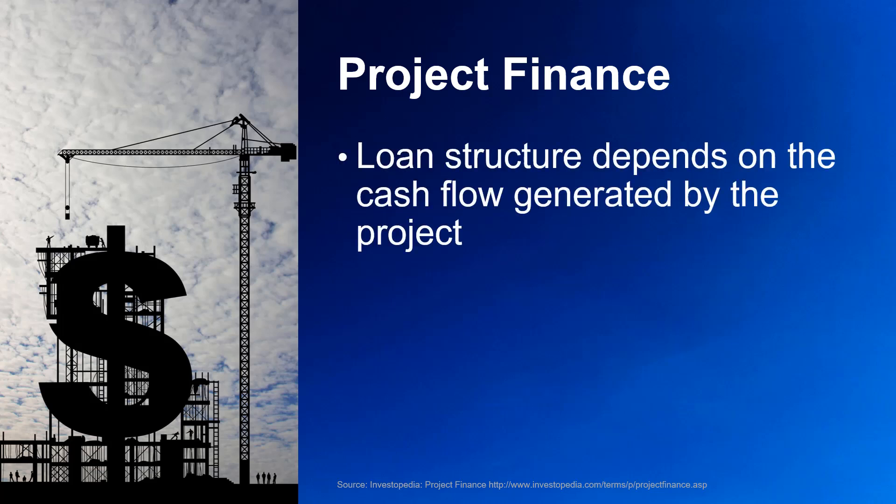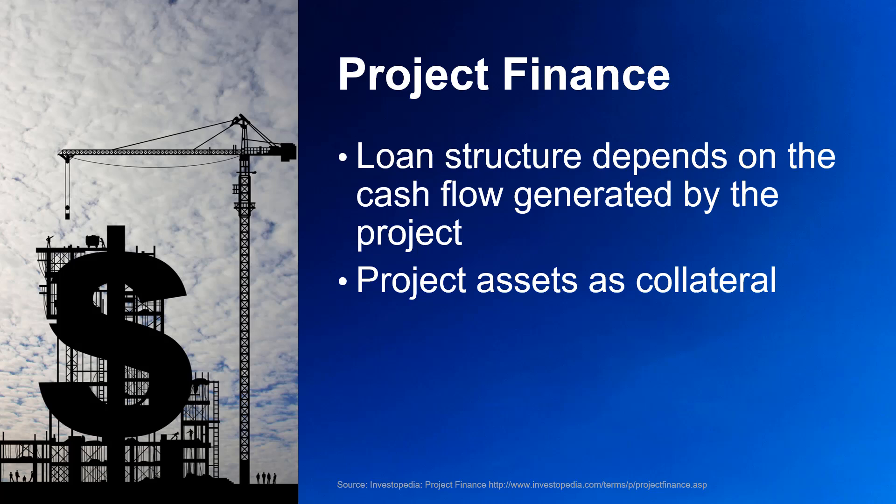Project finance is a loan structure that relies primarily on the project's cash flow for repayment. In layperson's terms, you are able to borrow money based on potential cash flow that may arise from the project. In these types of arrangements, the project's assets, rights, and interests are typically held as collateral or secondary security, where collateral means something is pledged as security for repayment of a loan which can be forfeited in the event of a default. Default is when someone cannot follow through with a contract — in this context, they cannot repay the loan.